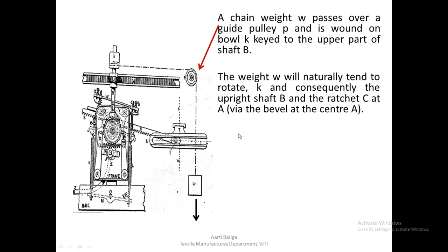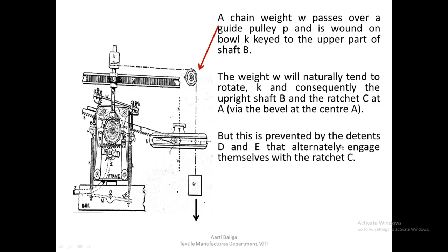Because of the weight, the ratchet will tend to move but it is prevented by detents D and E. Detent E and detent D are shown here, which will hold the ratchet and prevent it from any rotation.